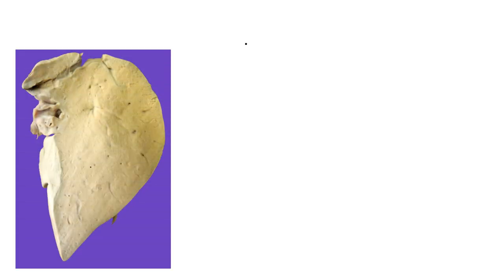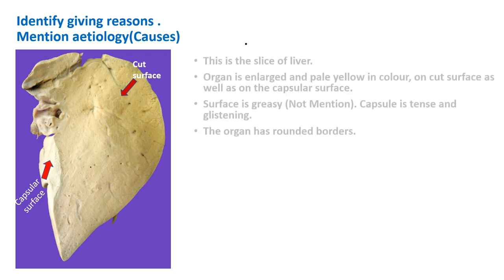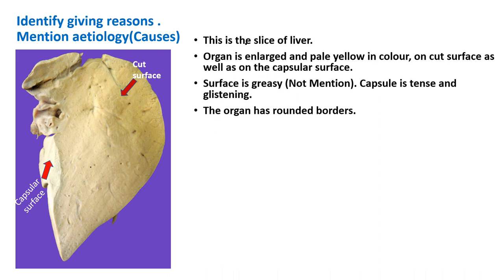Let us take the first image. This is a slice of the liver showing the cut surface as well as the capsular surface. Now identify the lesion giving reasons and mention the etiology. The organ is enlarged and pale yellow in color on the cut surface as well as on the capsular surface. The capsule appears tense and glistening.